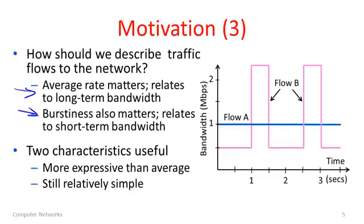Flow B is harder to carry with only one megabit per second of network bandwidth, because when it's above the average rate it's sending bursts into the network which will end up in queues somewhere, causing delay and potentially loss. So we might want to limit the burstiness, or at least know how big it is so we can handle it.